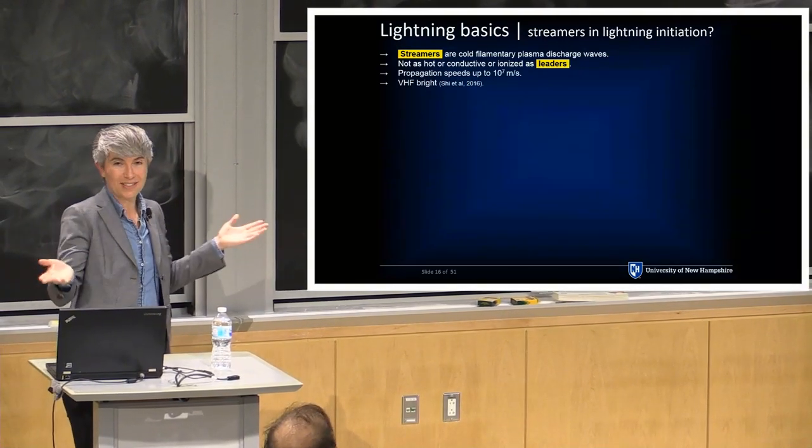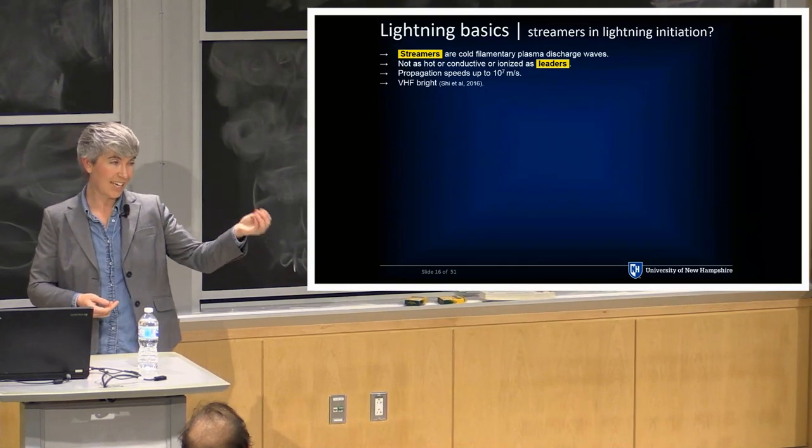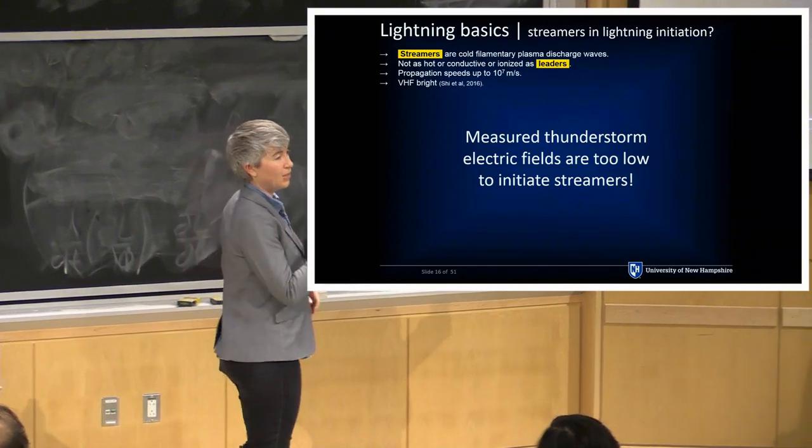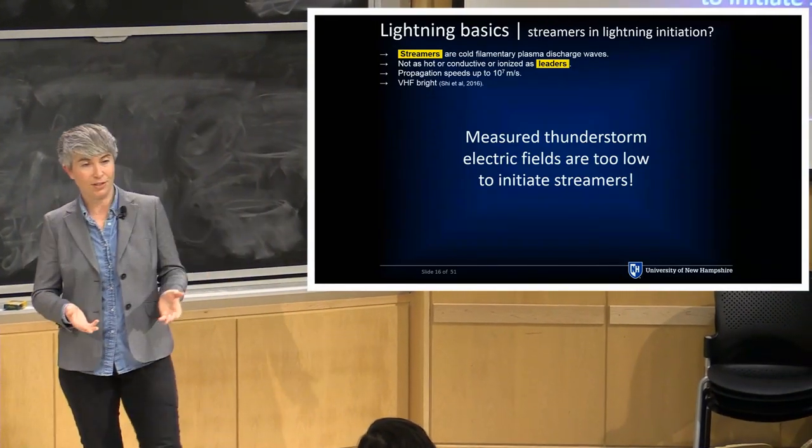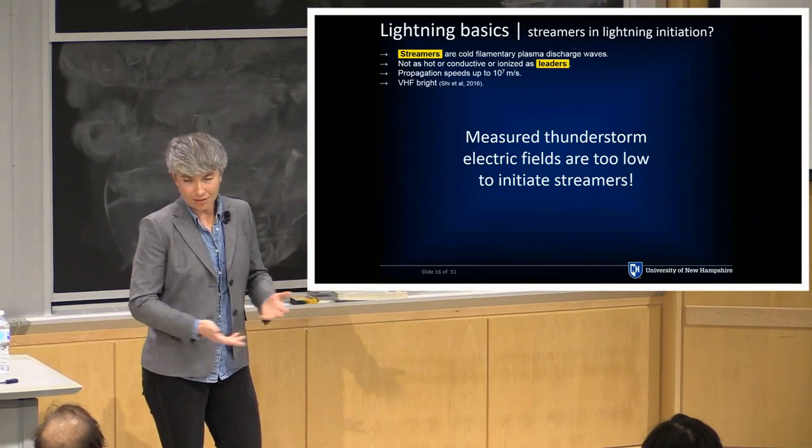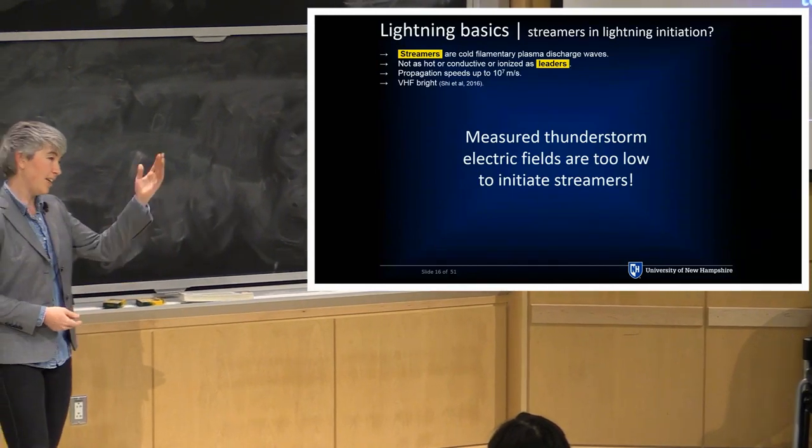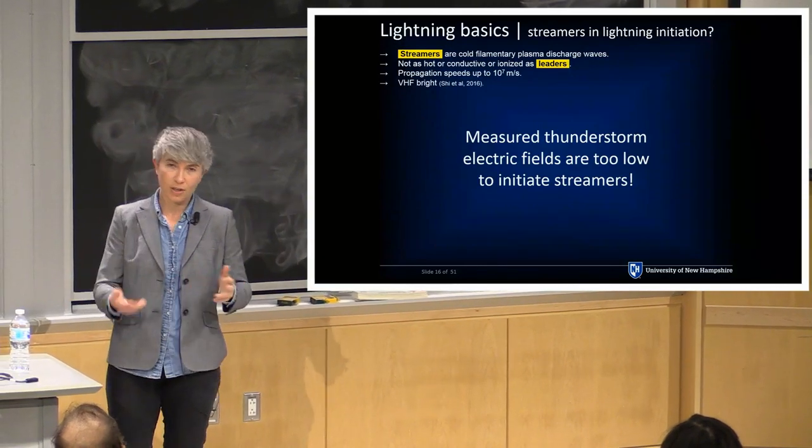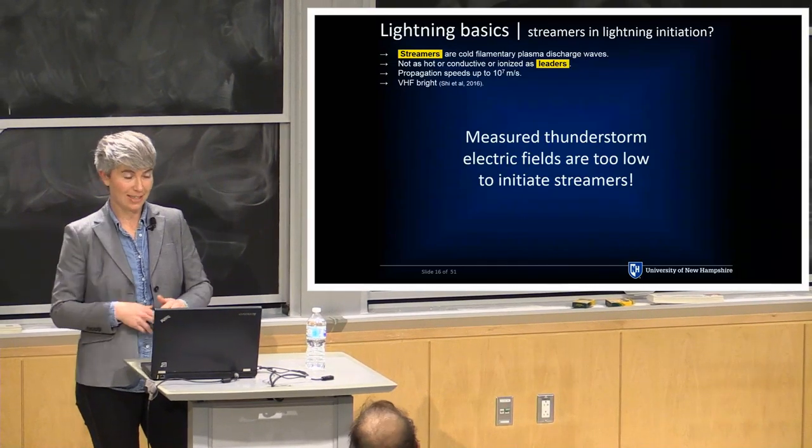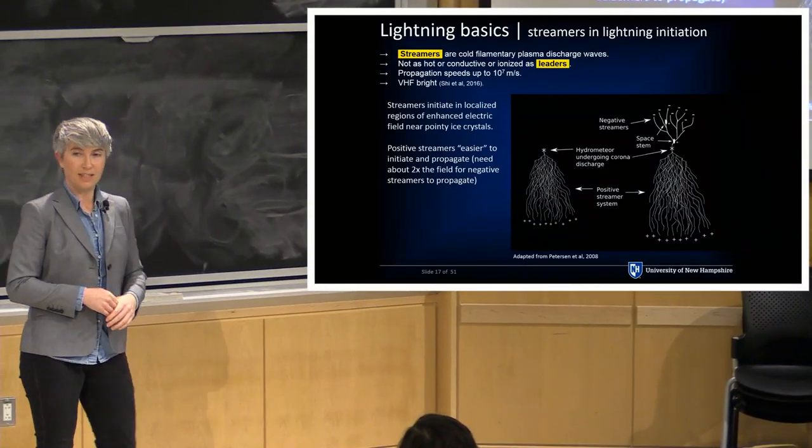So then streamers must have something to do with lightning initiation, right? All we can see so far is there's a leader, we can image it in optical, but how does it get started? We can't really see this, it's deep within the cloud. But there's one caveat, in that we have sent balloons up numerous times into thunderstorms, and we never see a threshold field capable of creating these streamers. So we know roughly that at sea level and standard temperature and pressure, it takes about three megavolts per meter to start a streamer going. And basically if we scale that up to thundercloud altitudes, the electric fields are always in order of magnitude too low to start streamers. So ten times less than what we need to start a streamer, and then hence lightning.